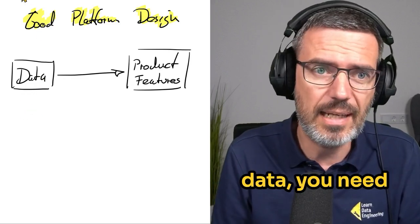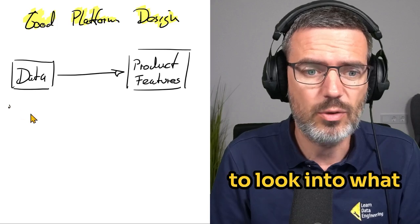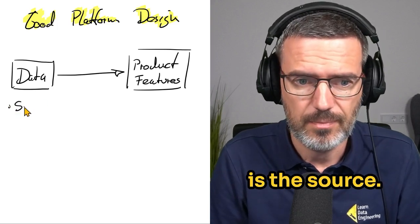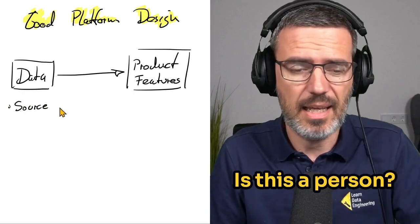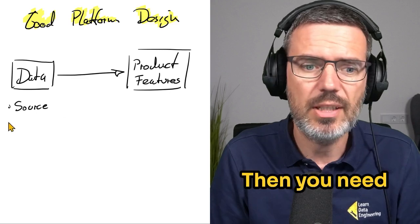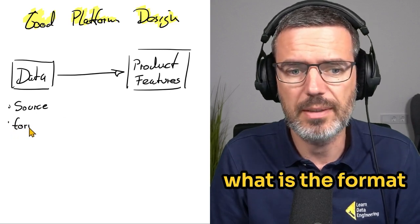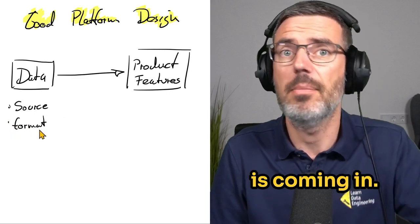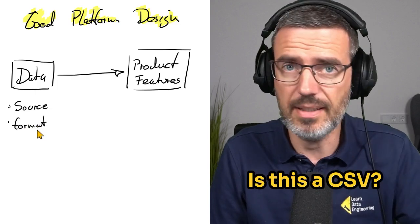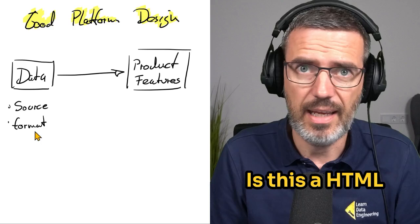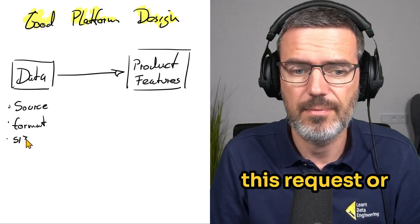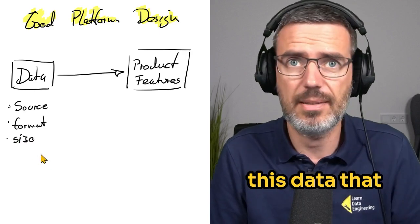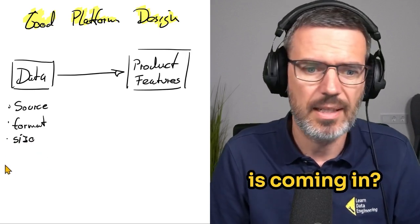So on the left here with the data, you need to look into what is the source. Is this a device? Is this an API? Is this a person? Then you need to think about what is the format of the data that is coming in. Is this a CSV? Is this an HTML request? What is this? How large is this request or this data that is coming in?